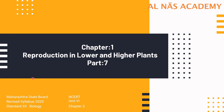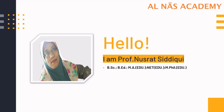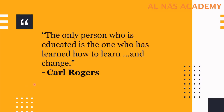Welcome once again to Alna's Academy for part 7 of chapter 1, Reproduction in Lower and Higher Plants, Revised Syllabus 2020 Standard 12 Biology, which also covers NCERT Unit 6 Chapter 2. Today we are going to discuss about Pollination — Introduction to Pollination, Self-Pollination and Cross-Pollination. I am your facilitator Nusra Siddiqui, with more than 15 years of experience in the field of teaching.